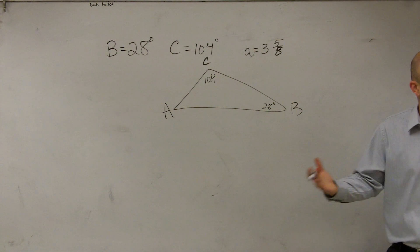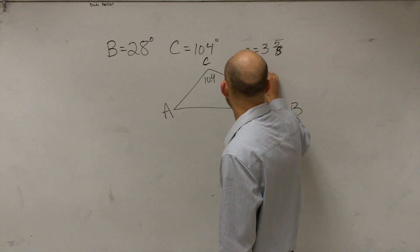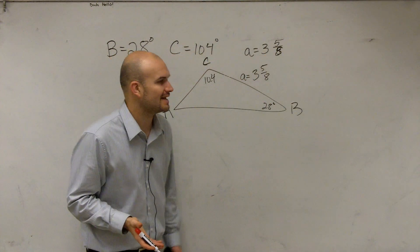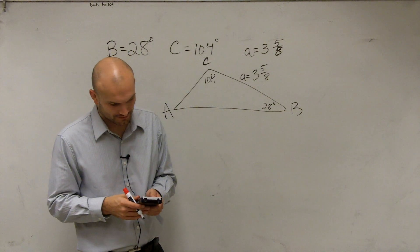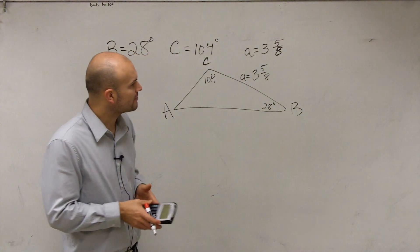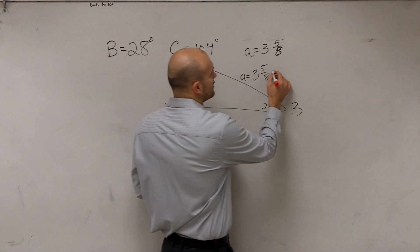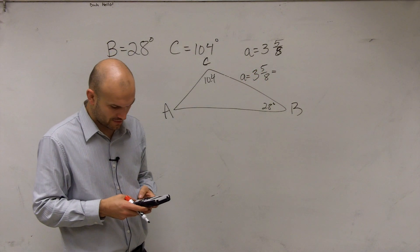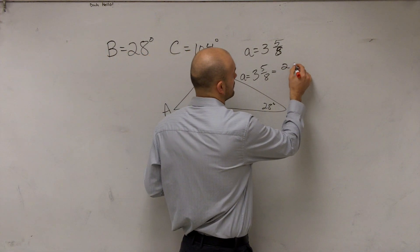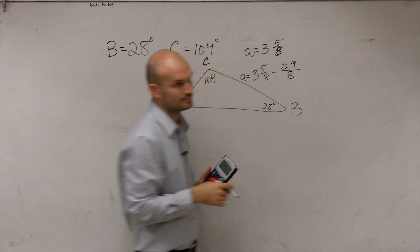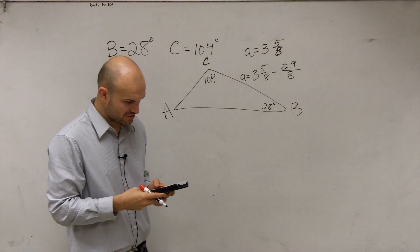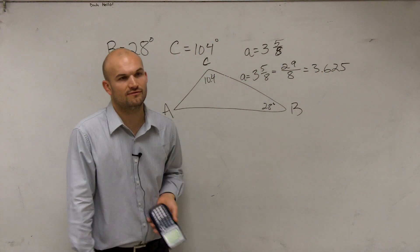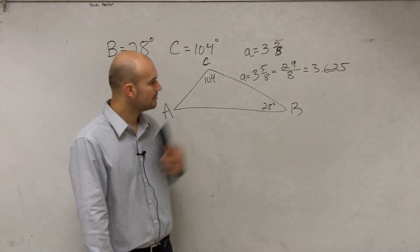It's okay where they're labeled. The only other information we know is A is 3 and 5 eighths. We don't really want to be dealing with mixed numbers when we're trying to find the rest of the lengths, so I'm going to convert this to a decimal. I can rewrite this as an improper fraction by multiplying 3 times 8 and adding 5 over 8, so 3 times 8 plus 5 equals 29 over 8. The decimal version is 3.625 — that's easier to plug into the calculator.